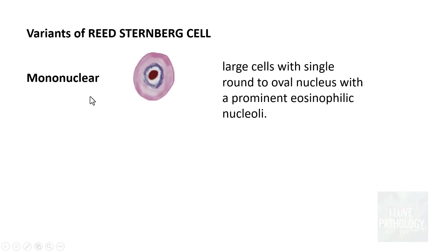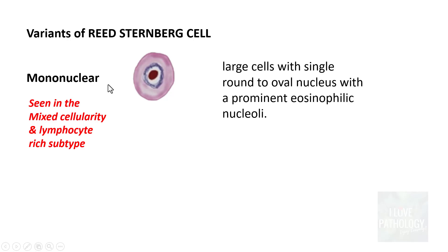There are certain variants of Reed-Sternberg cells. The classical variant was seen in the previous slide. The first variant is the mononuclear variant — a large cell with a single round to oval nucleus with a prominent eosinophilic nucleolus, which is around the size of a red blood cell or small lymphocyte. This variant is seen often in mixed cellularity and lymphocyte-rich subtypes.